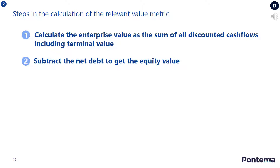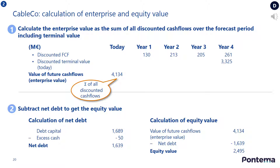The final step in performing a discounted cash flow valuation is to calculate the relevant value metric, which is normally enterprise value or equity value. This step has two key tasks: firstly, to calculate the enterprise value as the sum of all discounted cash flows, including terminal value; and secondly, to subtract the net debt to get the equity value. To calculate the enterprise value, simply sum all discounted cash flows over the forecast period, including terminal value, and subtract CableCo's net debt minus excess cash to arrive at the equity value. Either of these values would represent a fair standalone valuation of CableCo.